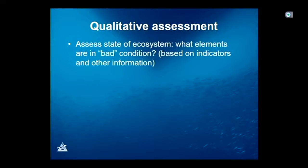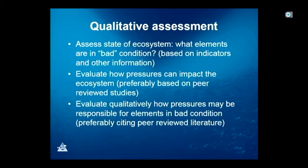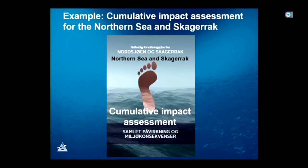The qualitative assessment approach is based on assessing the state of the ecosystem — specifically which elements are in bad condition, using reference points to define that. You then evaluate how pressures can impact the ecosystem by going through all the pressures in the system and assessing their potential impact, preferably based on peer-reviewed studies. Finally, you qualitatively evaluate how pressures may be responsible for elements in bad condition. This was done for the Norwegian management plan for the North Sea a few years ago.